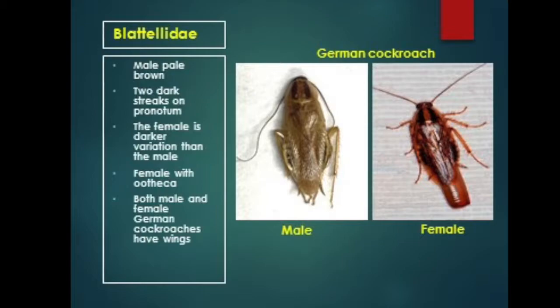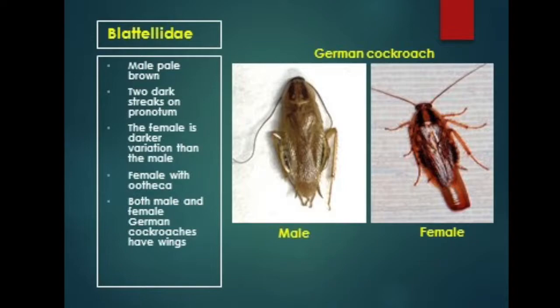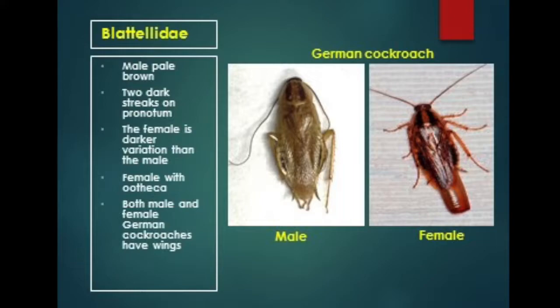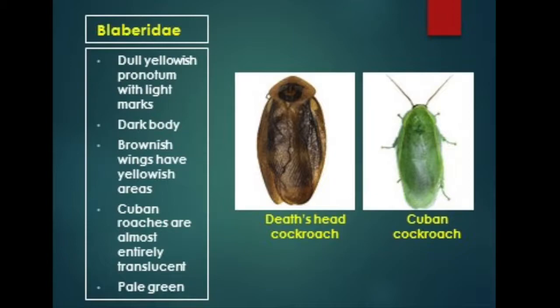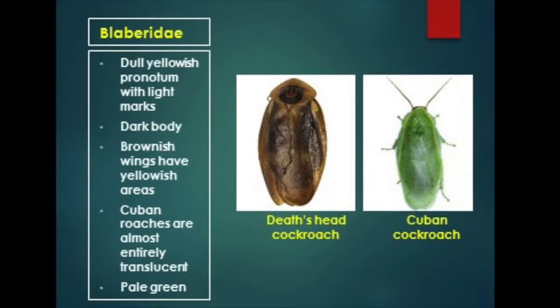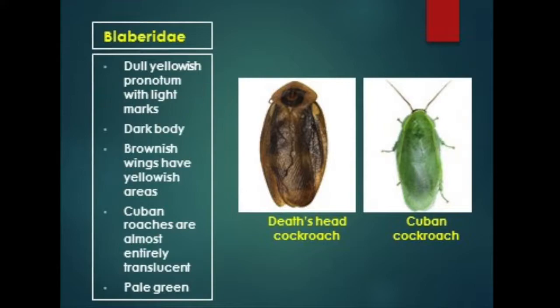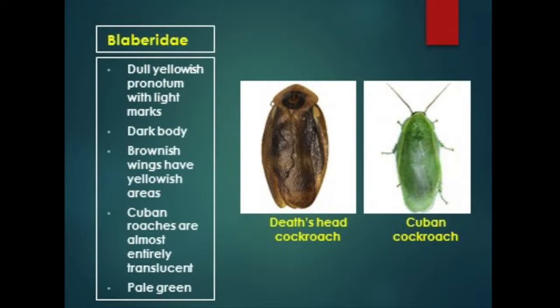For the Blattellidae, the most common is the German cockroach. The male is pale brown and has two dark streaks on the pronotum. The female is a darker variation than the male and carries her ootheca. The family Blaberidae is characterized by cockroaches with dull yellowish pronotum and light marks, with a dark body and brownish wings including yellowish areas.